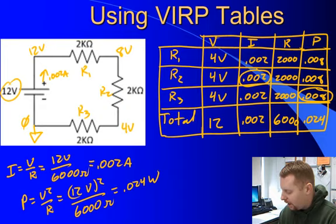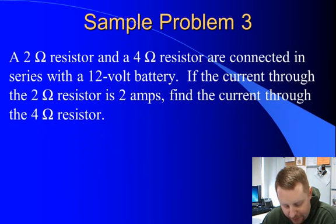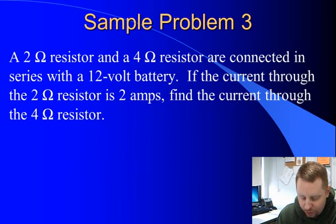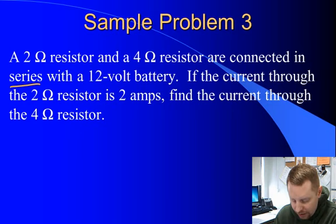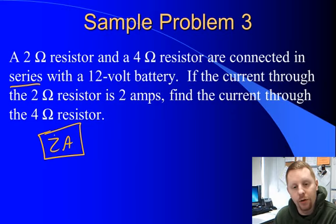Another sample problem: a 2 ohm resistor and a 4 ohm resistor are connected in series with a 12 volt battery, and the current through the 2 ohm resistor is 2 amps. Find the current through the 4 ohm resistor. Since they're connected in series, the current anywhere in the circuit is the same, so we must have 2 amps going through the 4 ohm resistor as well.